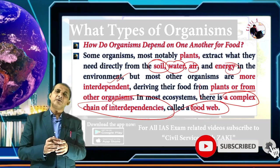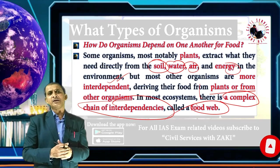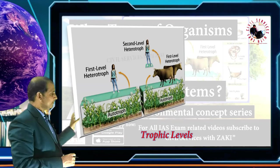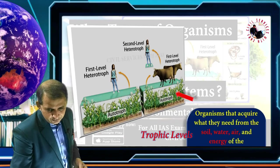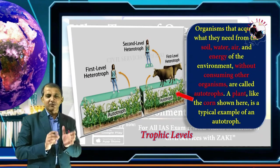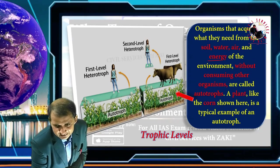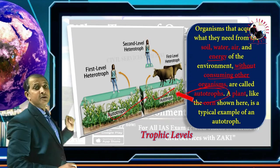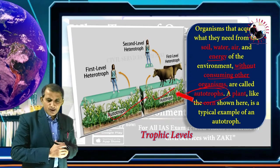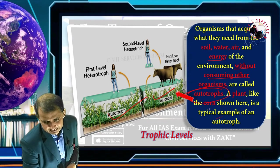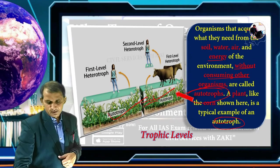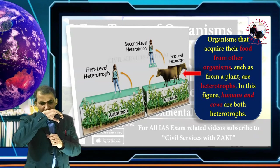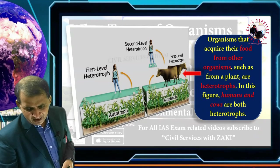The levels of dependency in a food chain are called trophic levels. Organisms that acquire what they need from the soil, water, and energy environment without consuming other organisms are called autotrophs. These are the first trophic level — the primary producers. Organisms that acquire their food from other organisms, such as from plants, are heterotrophs.